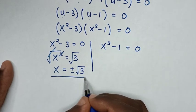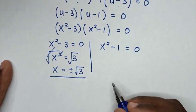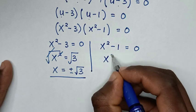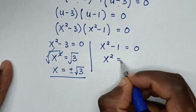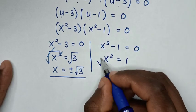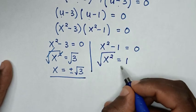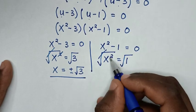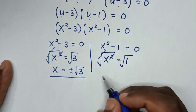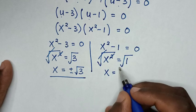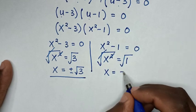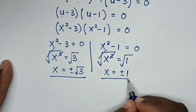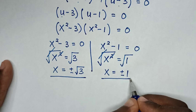Second solution: x² - 1 = 0, so x² = 1. Applying square root to both sides gives x = ±1. These are the other values of x.